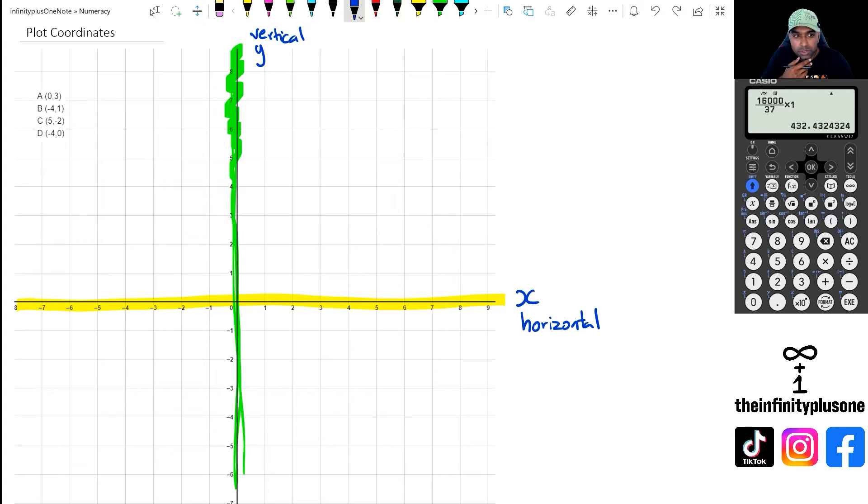So when it comes to plotting points, when you get given a coordinate, you actually get given two values. The first value is always going to be on the x-axis, and then the second value is going to be along the y-axis.